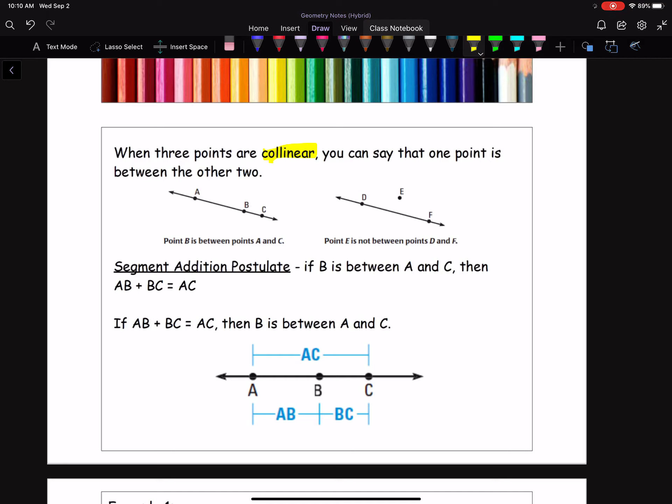So if we look at the examples below, we could say that point B is between A and C. This is mind-blowing stuff right here. In the example on the right, point E is not between D and F because it's not on the same line. Those three points are not collinear.